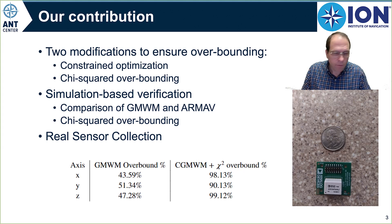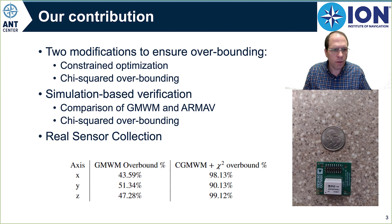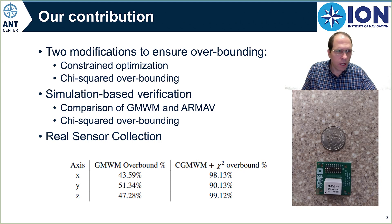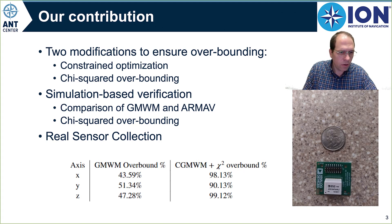If you look at the paper, there are a lot of results there on simulation-based techniques. We show, if you compare the GMWM and the RMav technique, we end up going with the constrained GMWM technique. We also showed the chi-squared bounding overbounds to the specifications that we told it to — we told it to overbound 95% of the time, and we see that happen.